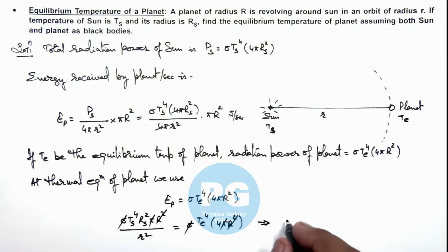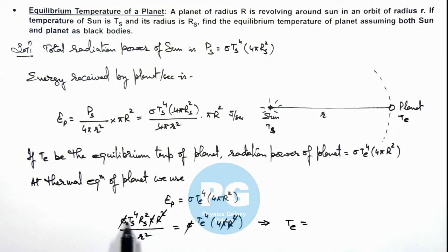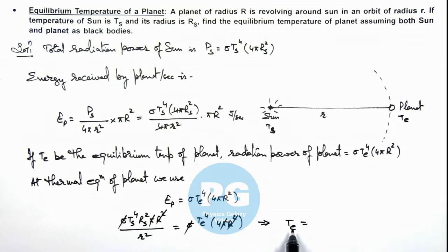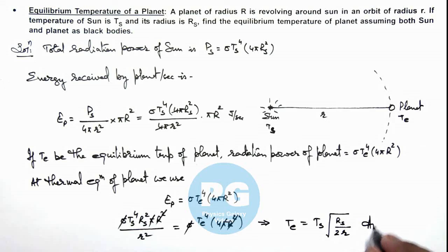This results in the equilibrium temperature of the planet, Te. On the left-hand side we have Ts to the power 4 times Rs squared divided by R squared, and the factor of 4 moves to the other side. Therefore, the equilibrium temperature of the planet is Te equals Ts multiplied by the square root of Rs divided by 2R. That is the final result of this problem.